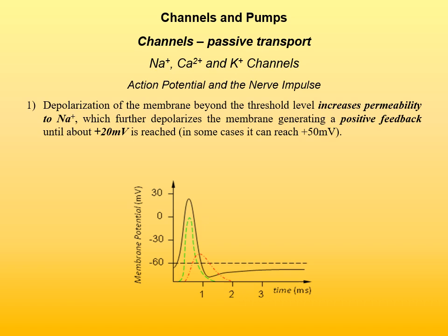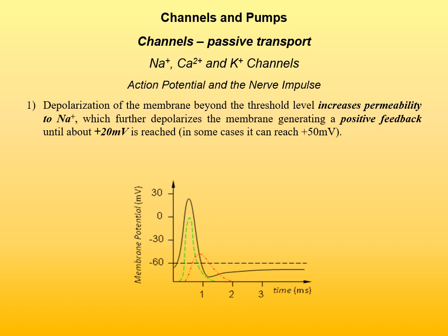Depolarization of the membrane beyond the threshold level increases permeability to sodium cations, and that further depolarizes the membrane, generating a positive feedback until about plus 20 millivolts is reached, and in some cases up to plus 50 millivolts — shown in green. Permeability to sodium cations increases and sodium cations rush into the cell. The membrane then spontaneously becomes less permeable to sodium and more permeable to potassium. Potassium ions flow out and the membrane is restored to minus 70 millivolts, shown in red.